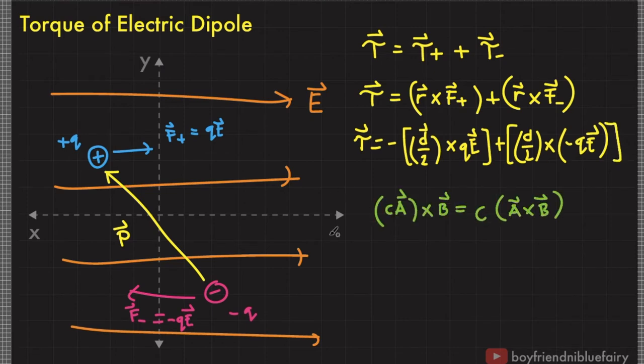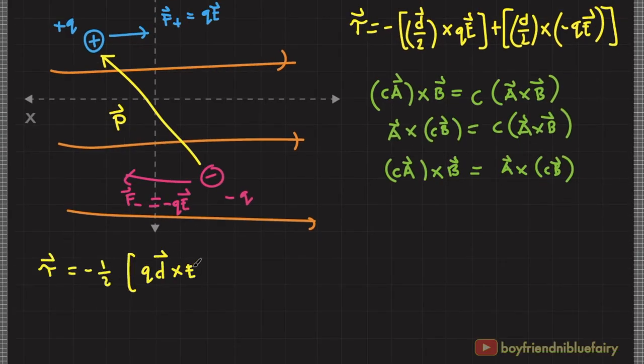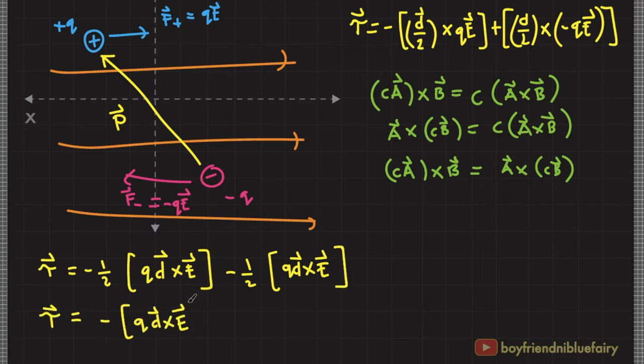Recall this property that we can extract a constant out of a cross product. We apply this property to extract the constants in the above expression. Recall the definition of electric dipole moment: P equals charge times distance.